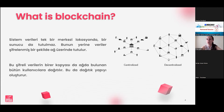We can classify the advantages of the blockchain system as four: as it is decentralized, every process is fast; the control of every phase makes the whole process transparent; having data in different types of systems makes it more secure; and as at the center there is a mathematical formula that works automatically, there is no error margin.